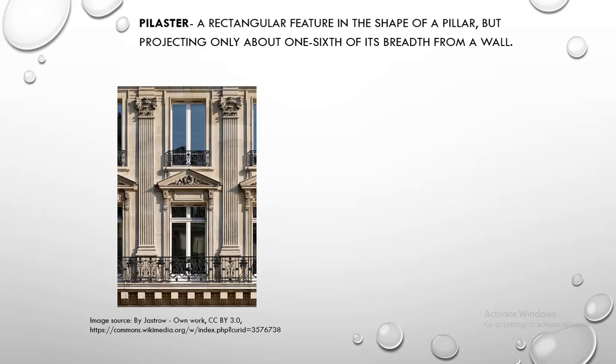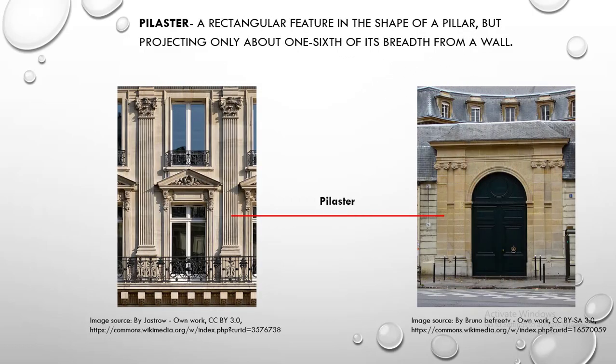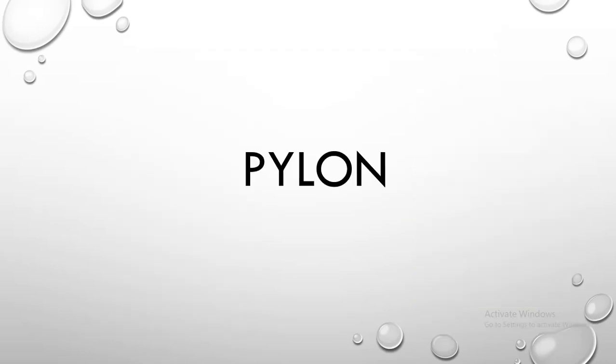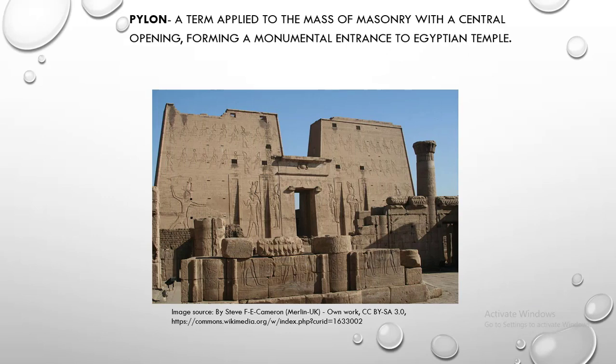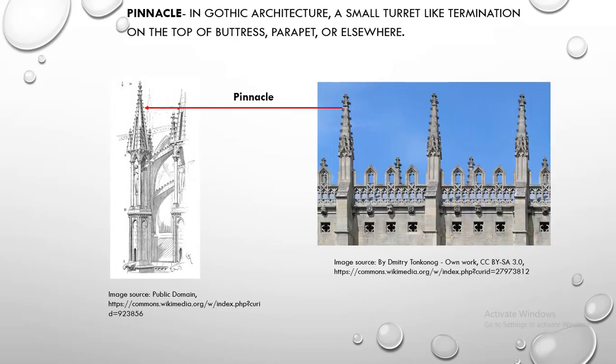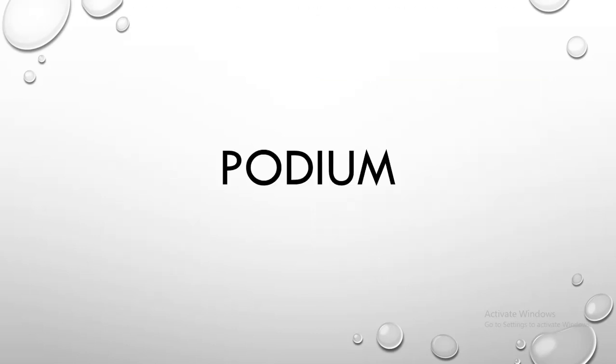Pilaster. Pilaster is a rectangular feature in the shape of a pillar, but projecting only about one-sixth of its breadth from a wall. Pylon. Pylon is a term applied to the mass of masonry with a central opening, forming a monumental entrance to an Egyptian temple. Pinnacle. Pinnacle is, in Gothic architecture, a small turret-like termination on the top of a buttress, parapet, or elsewhere.